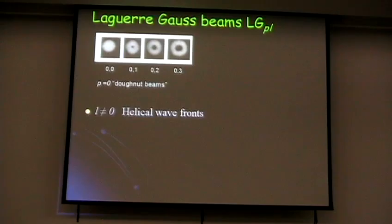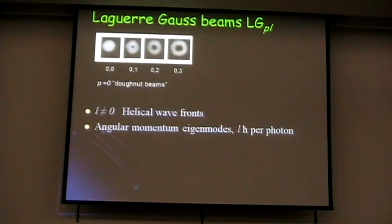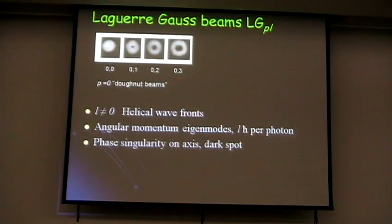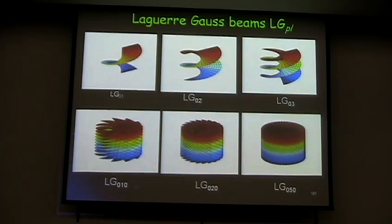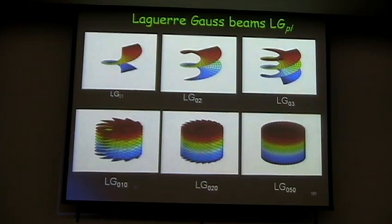For L not equal to 0, the beam carries L·h-bar angular momentum per photon and has a phase singularity on axis — it's a dark spot, looking like a donut beam. We can generate all these laser beams. If we take Gauss-Laguerre L=50, it carries 50 times h-bar of angular momentum, but the ring will be very narrow and the spot in the middle rather large.